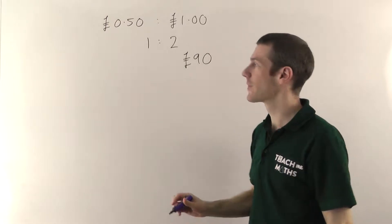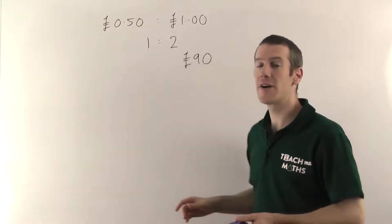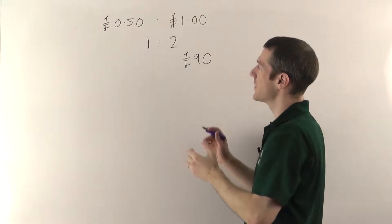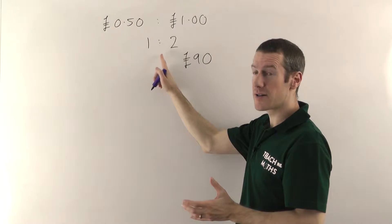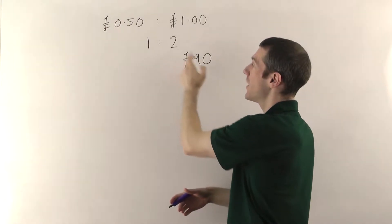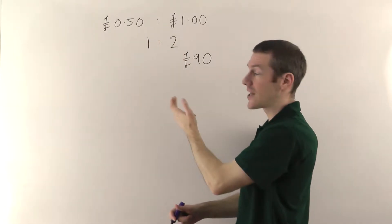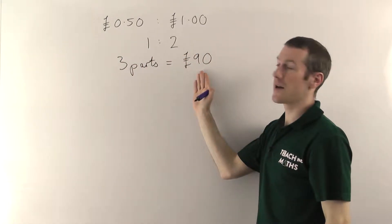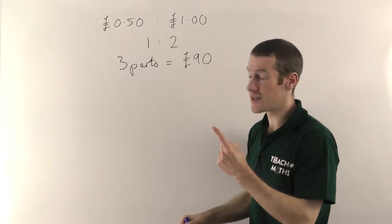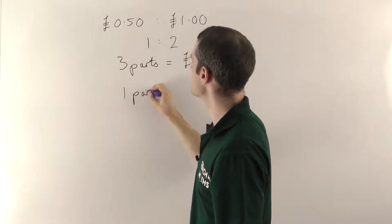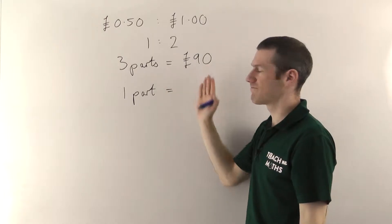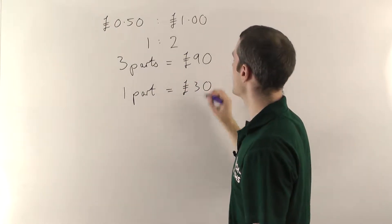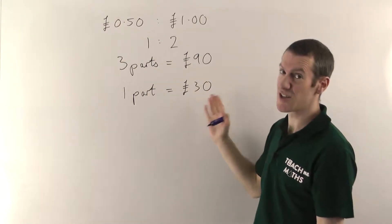The way you do these kinds of problems is always the same — you always need to find out how much one part is worth. In this case 90 pounds is the total amount of money, and altogether there are three parts. One part goes to me, two parts go to my friend, so three parts makes up the whole 90 pounds. To find what one part is worth, if three parts is 90 pounds, one part is three times less — you divide by three. 90 divided by 3 gives us 30 pounds.